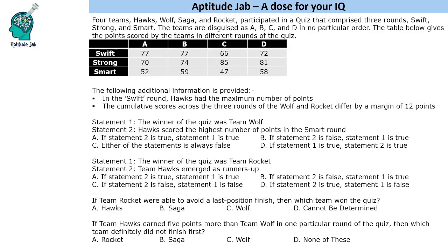Hello everyone, welcome to Aptitude Jab. This set says that there are four teams: Hawk, Wolf, Saga and Rocket. They participated in a quiz that had three rounds: Swift, Strong and Smart. These teams are disguised as A, B, C, D in no particular order, and the table gives the points scored by the teams in different rounds of the quiz.